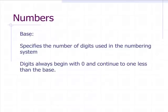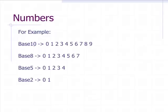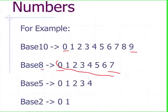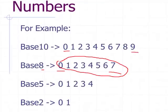First, the base of a number specifies how many digits are used in the numbering system. Digits always begin with 0 and continue to one less than the base. For example, in base 10 it goes from 0 to 9, and in base 8 it goes from 0 to 7.